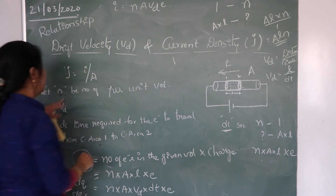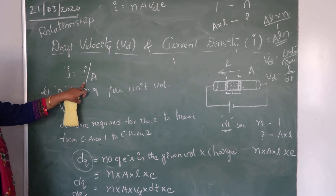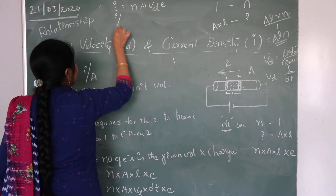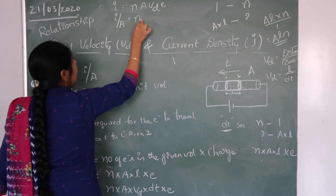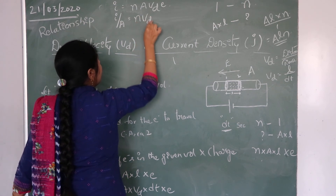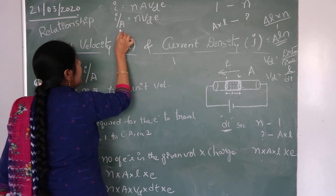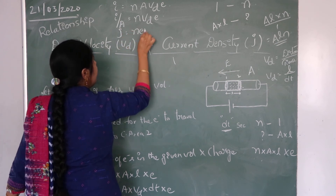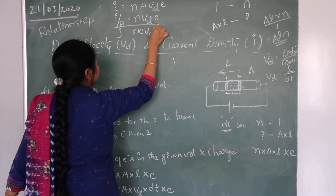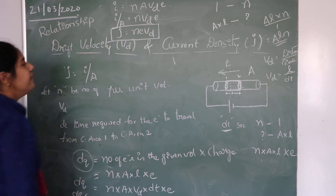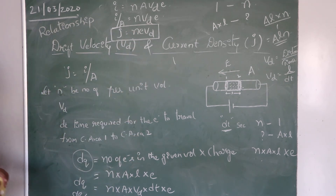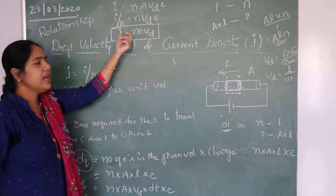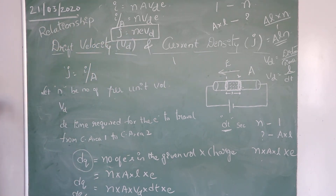We know that the current per unit cross-sectional area can be written as I divided by A. So I by A equals N × VD × e. And I by A is nothing but J, the current density. Therefore, J = N × e × VD. This is how we establish the relationship between drift velocity and the current density J.